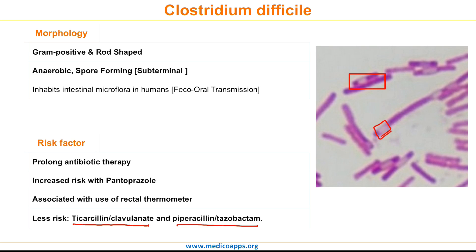As a recap: Clostridium difficile is a gram-positive, anaerobic, rod-shaped bacilli with subterminal spores. It is a part of intestinal microflora and, under certain risk factors — most importantly prolonged antibiotic use — it turns pathogenic.